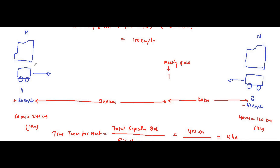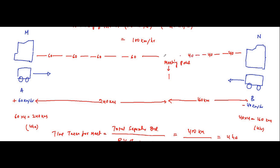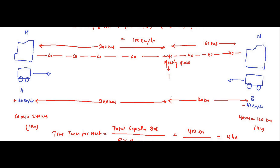In the first one hour, car A will cover 60 kilometers, then in the next hour another 60 kilometers, then more 60, and finally covering 240 kilometers total in 4 hours. Similarly, car B will cover 40 kilometers in the first hour, then 40 more — total 80 in the second hour — then more 40, then more 40, and finally it will reach the meeting point, covering 160 kilometers in 4 hours. This is all because of the relative velocity of approach.